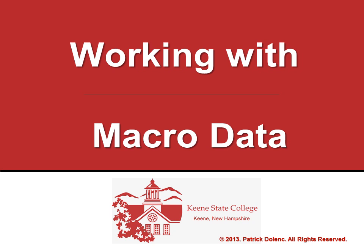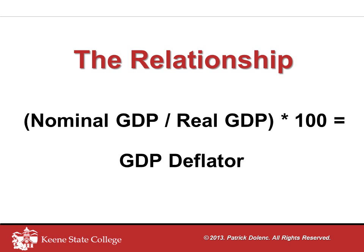In order to do that, you want to familiarize yourself with what I'm referring to here as the relationship. The relationship connects the three different kinds of variables to one another. It's an equation, or a formula, and it's one that you want to master. The relationship says that the ratio of nominal GDP to real GDP, when multiplied by 100, provides the GDP deflator for that particular year.